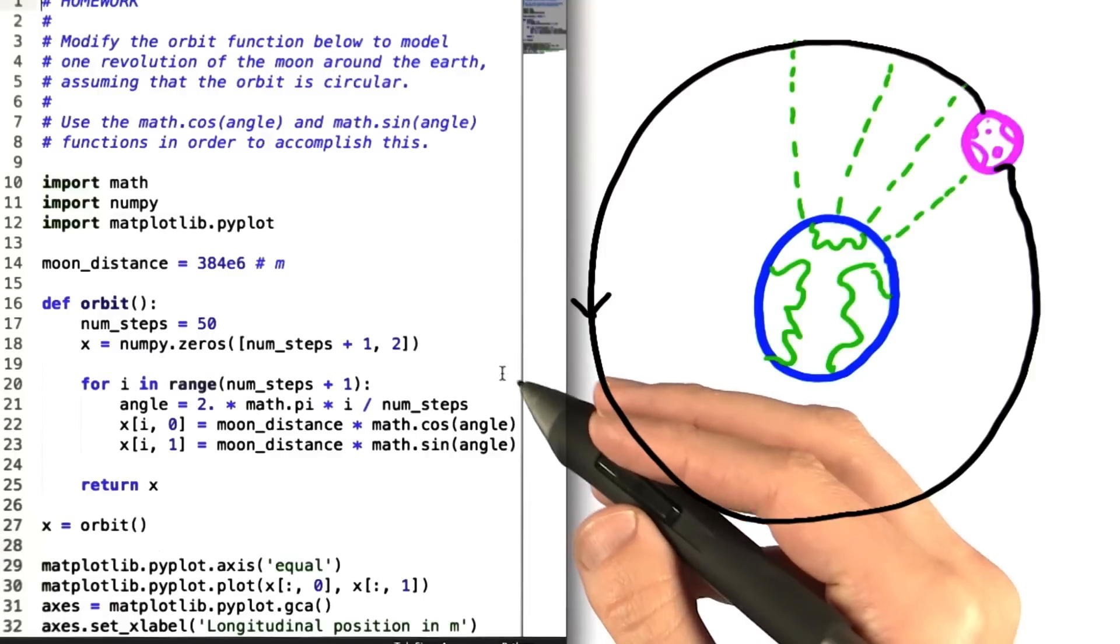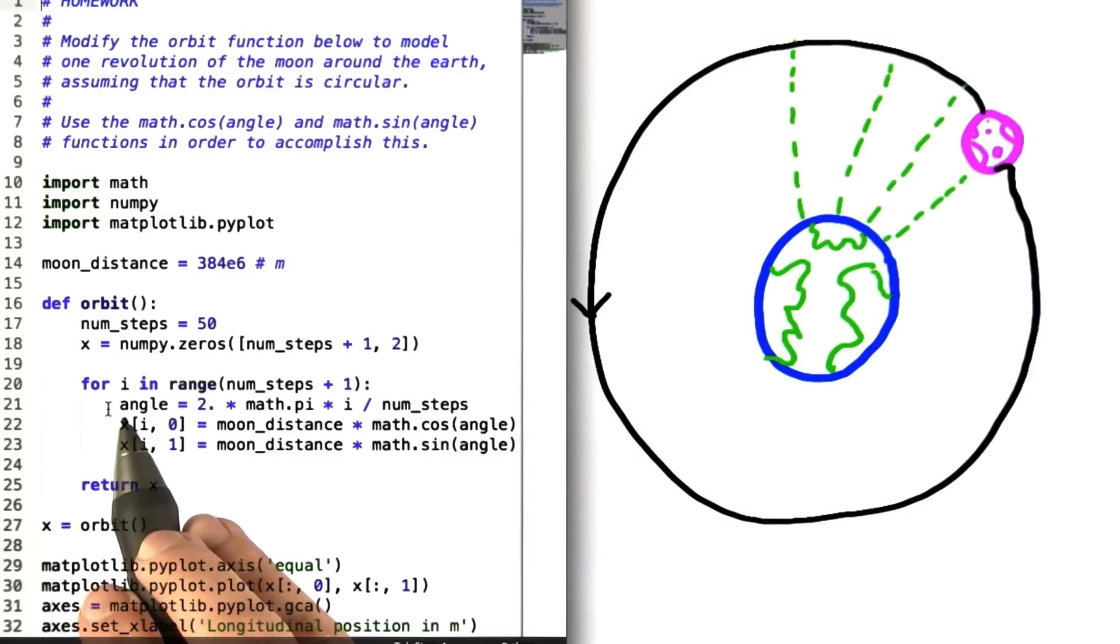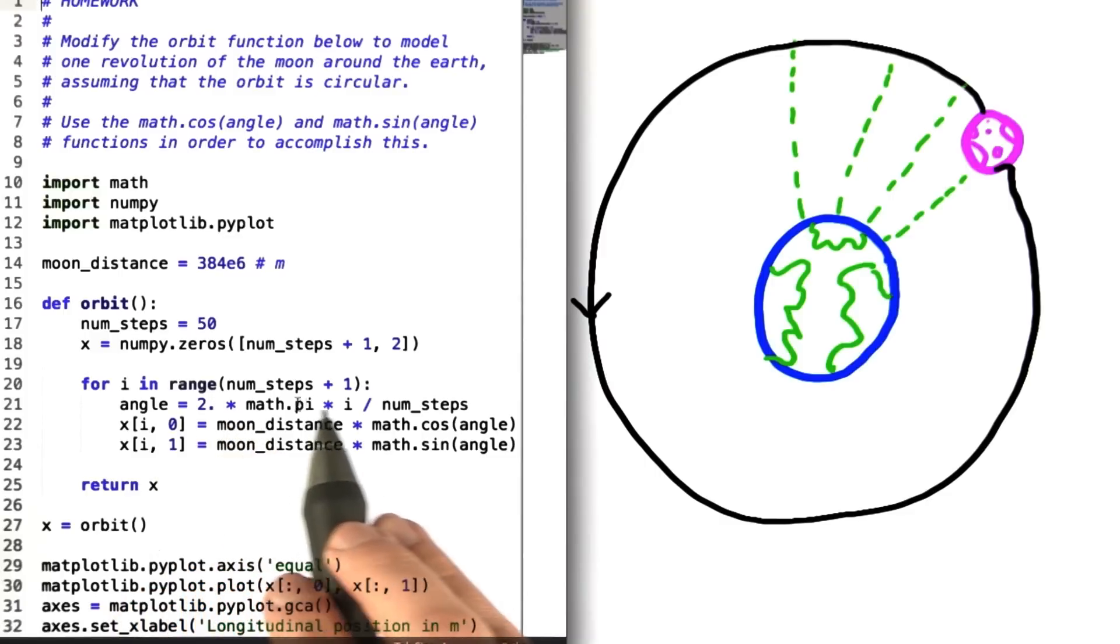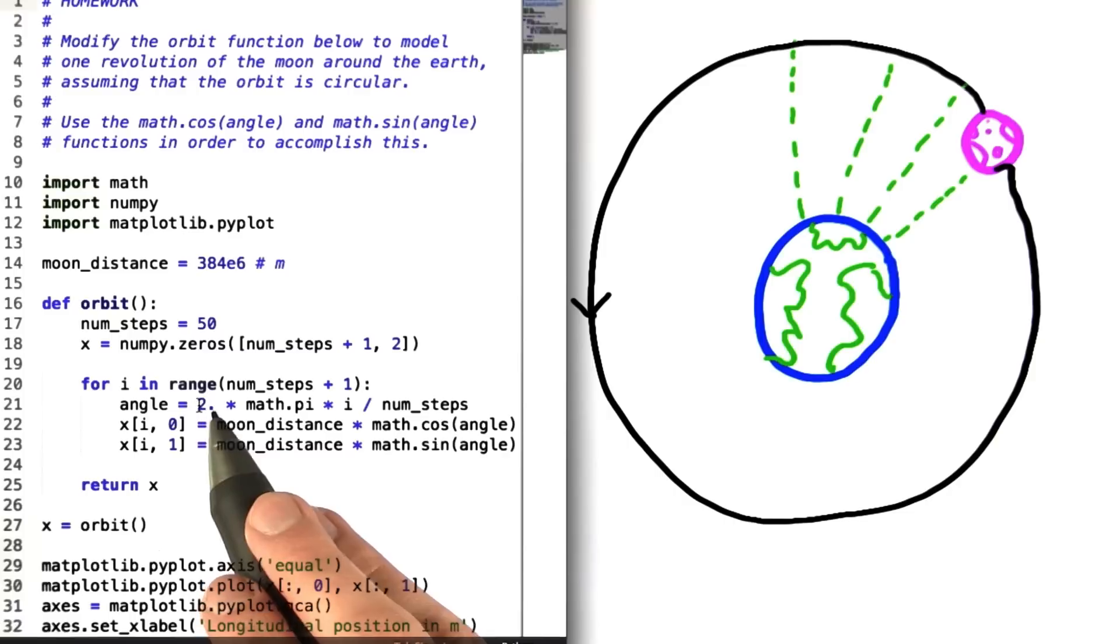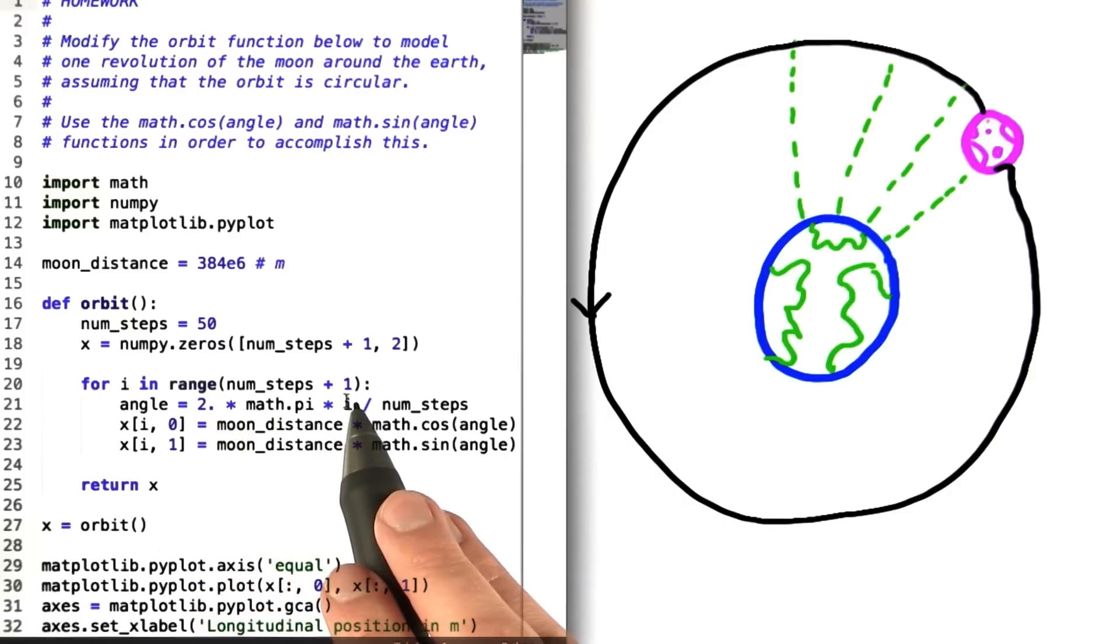So in the solution to this problem set, we've added a for loop whose index ranges from 0 to the number of steps. We put the number of steps plus 1 as the argument for range because i will go up to the number inside minus 1.